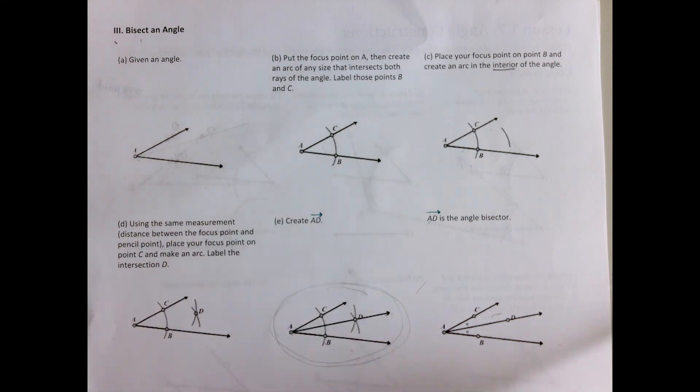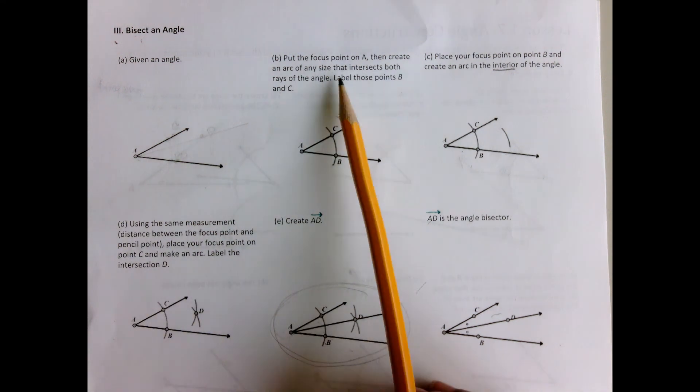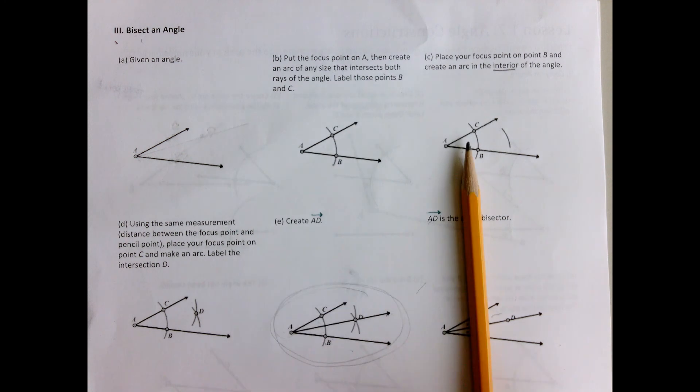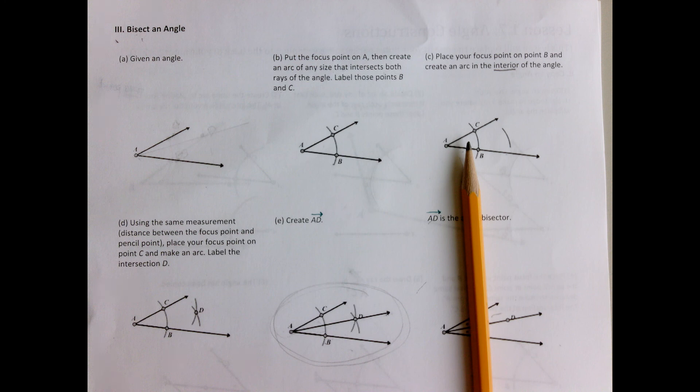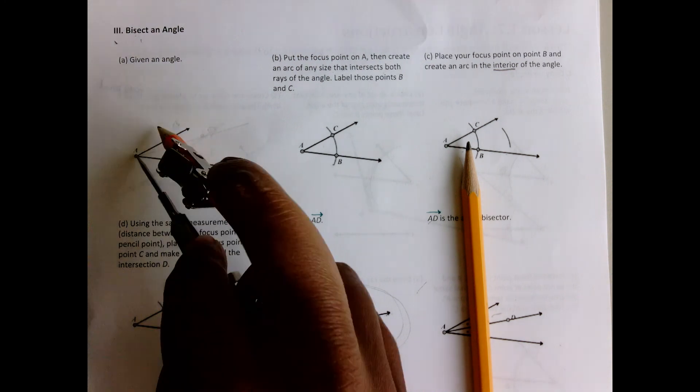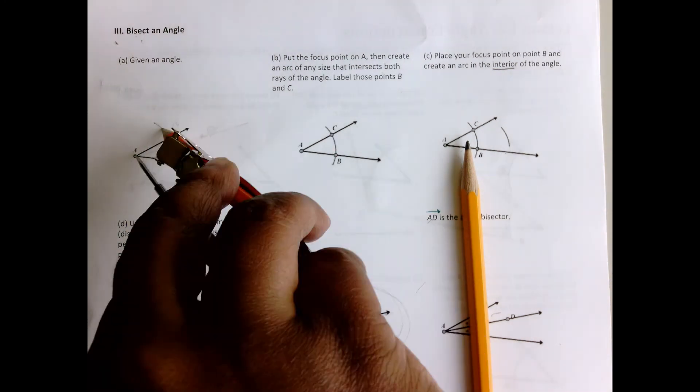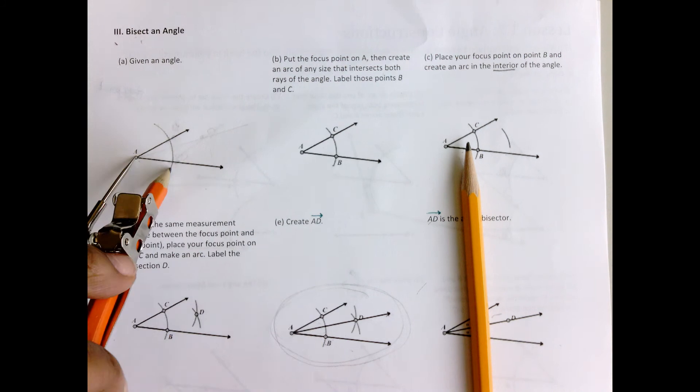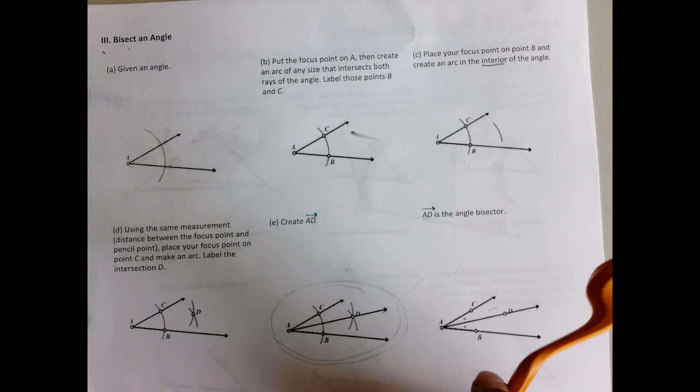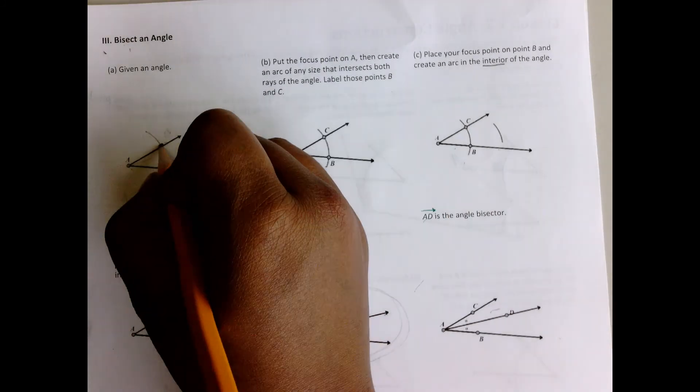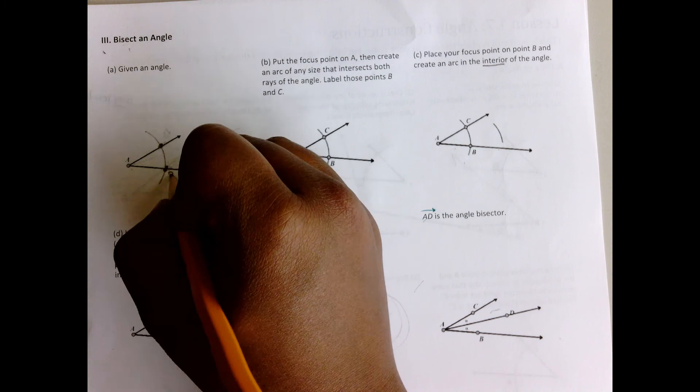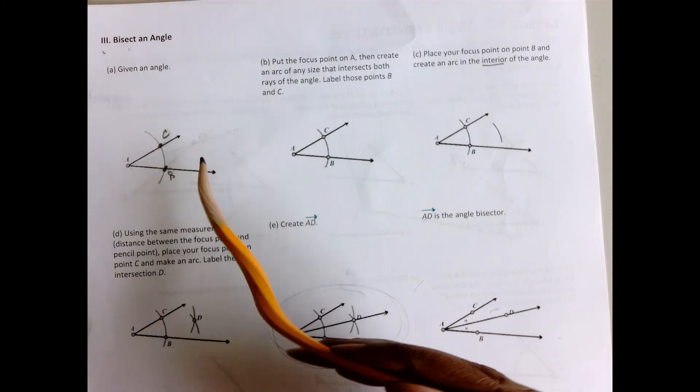We're going to start with the first step which is to put the focus point on A, then create an arc of any size that intersects both rays of the angle, and then label those points B and C. All right, so I'm going to make an arc, label it point B and C, and so that first step is done.